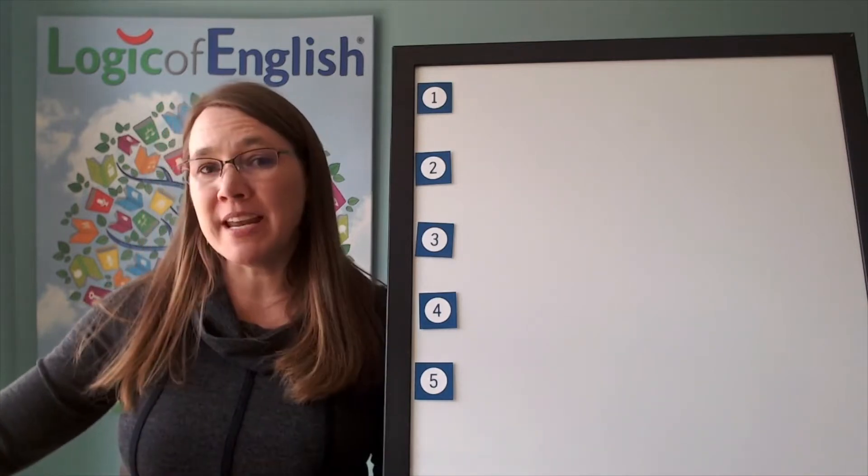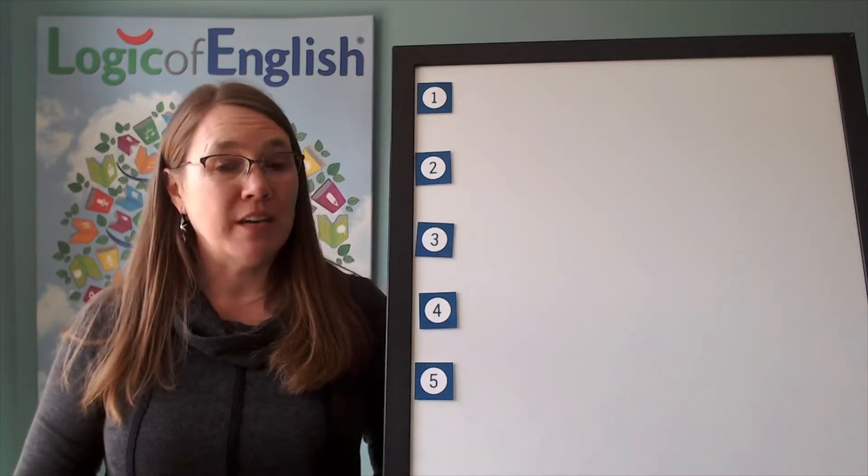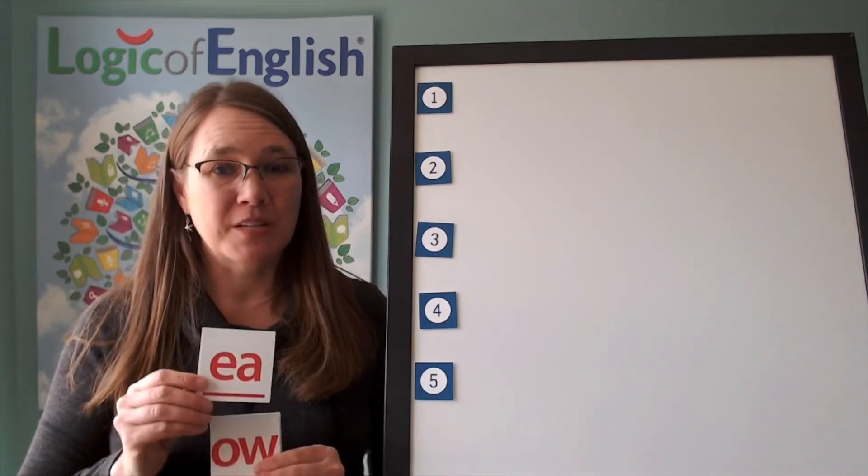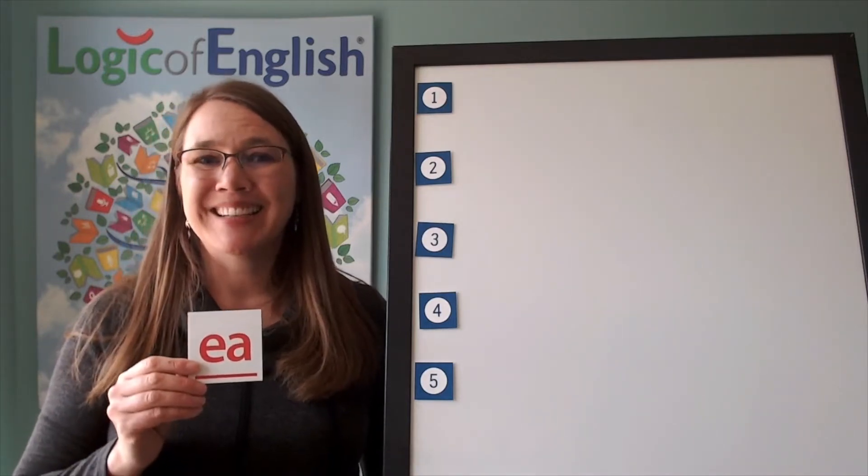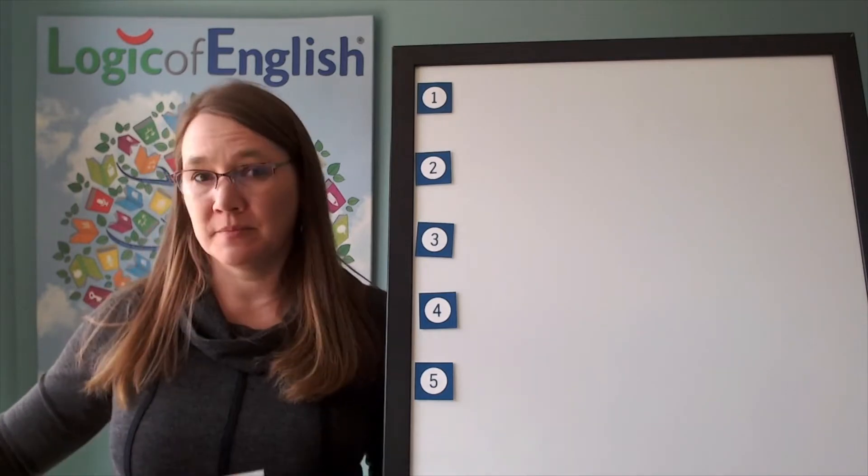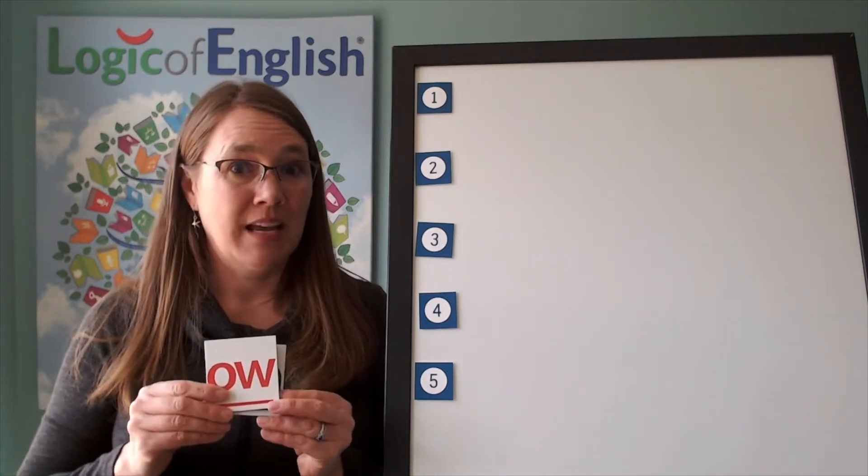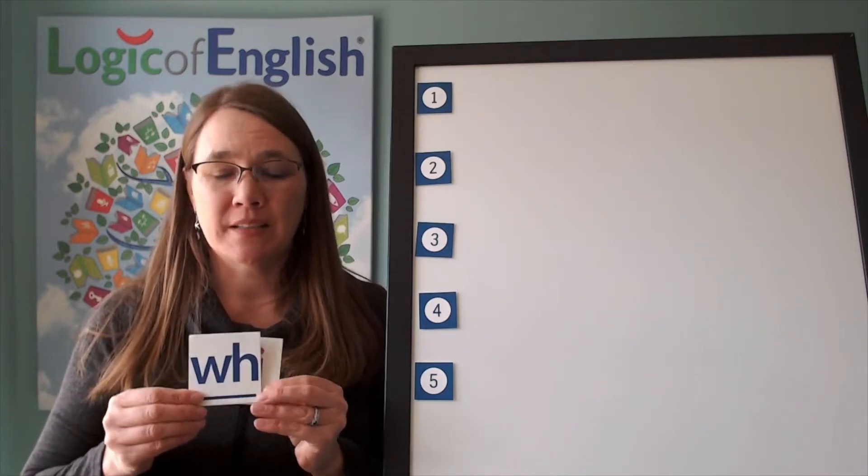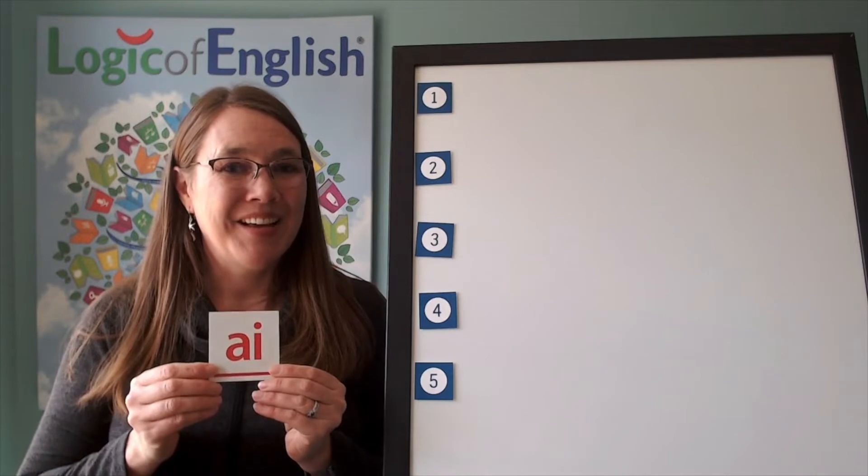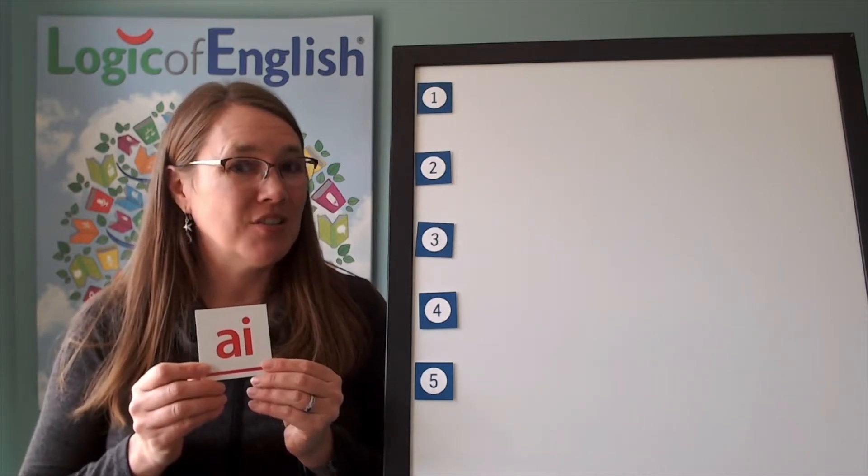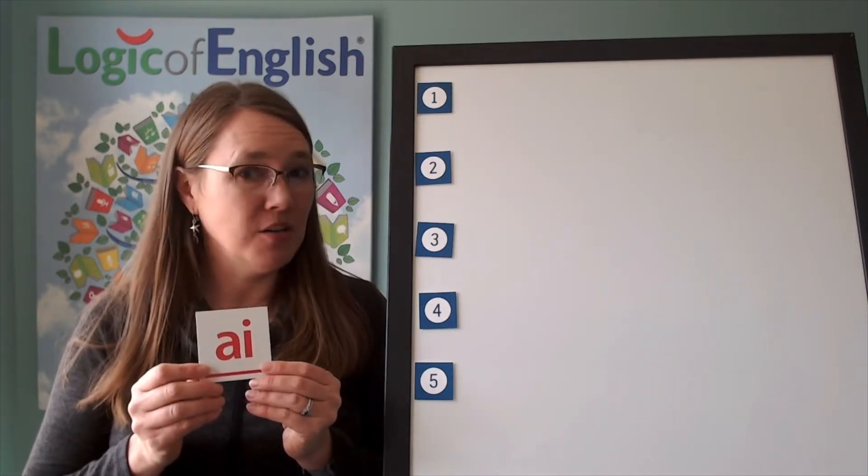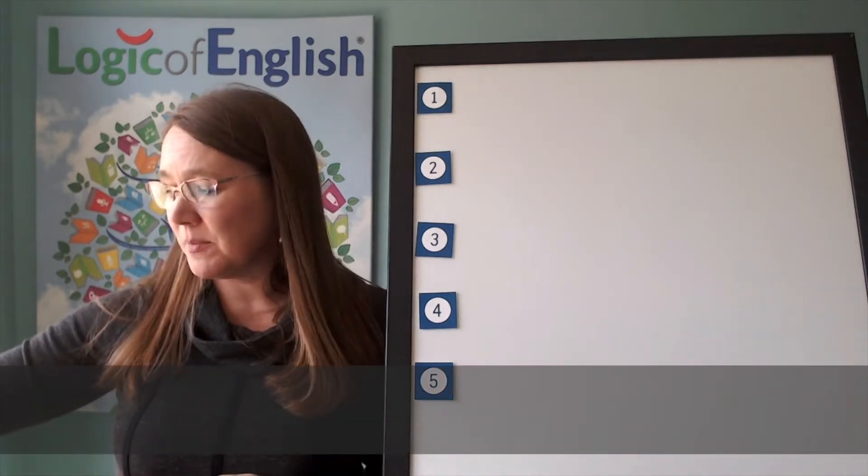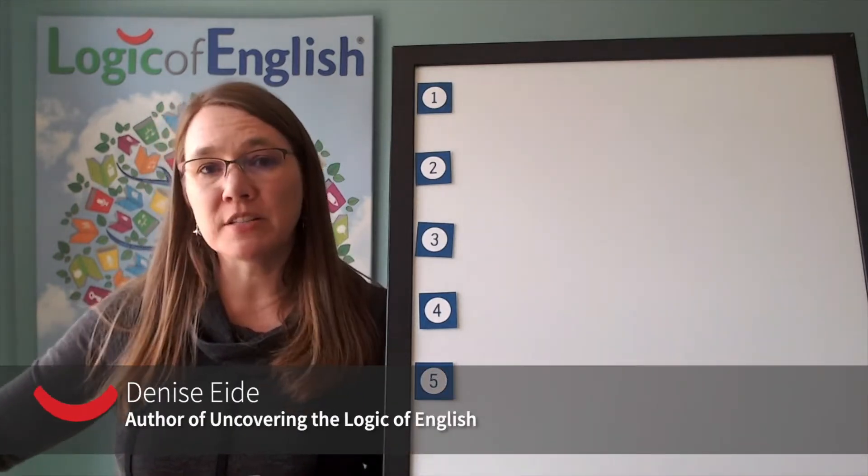Okay, before we begin, since we are in Foundation C, I want to review just a couple phonograms. What does this say? E, E, A. How about this one? Ow, O. How about this? Wuh. How about this? A. Where may I use this? This is two letter A that I may not use at the end of English words. These are all phonograms that we learned in Foundations B.